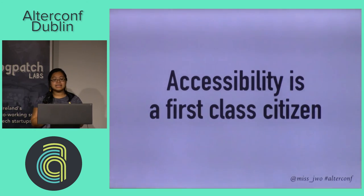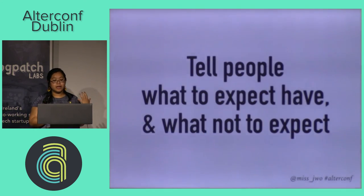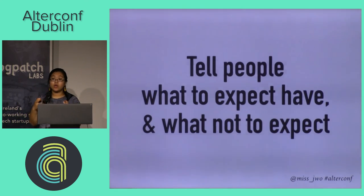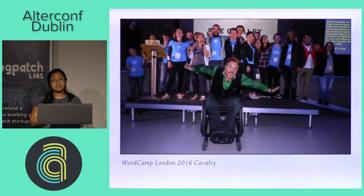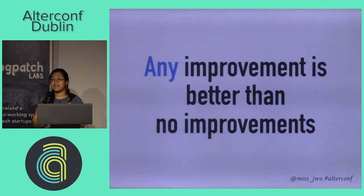There is a lot more that you can do, but I hope you have some ideas from what I've said. If you pull accessibility as a first-class citizen it really helps your event. Set the expectation: tell people what to expect but also what not to expect — if you can't do something, that's fine, just set that expectation so they can work around it. Any improvements to our community are better than no improvements. These were my team — the best bunch in the world. If you have any questions, you can ask me later, I'm going to be here all day. Thank you.